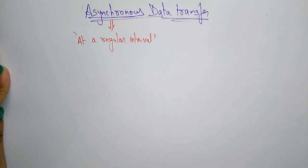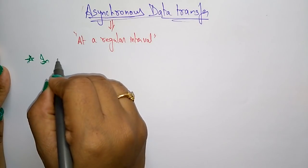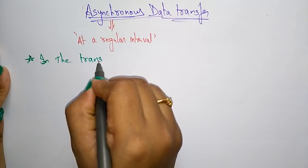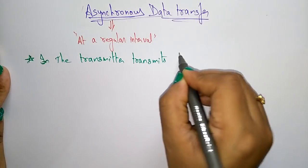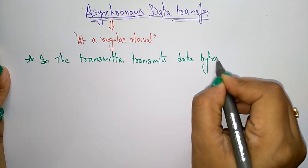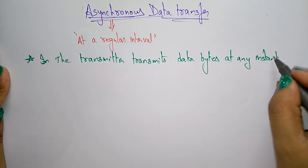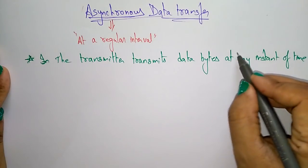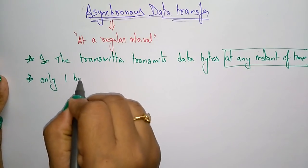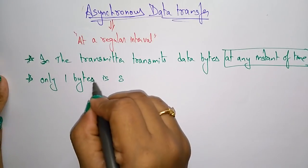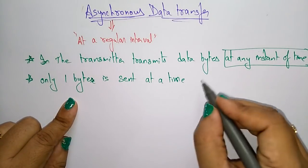Let me write the points for asynchronous data transmission — how the data is transmitted. The transmitter, which is the sender, transmits data bytes at any instant of time. This is important to note: in asynchronous transmission, data bytes can be sent at any instant of time, and only one byte is sent at a time.